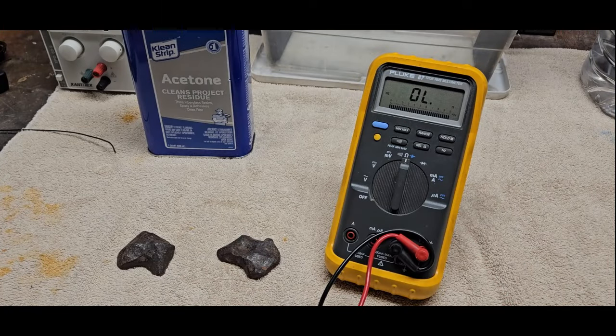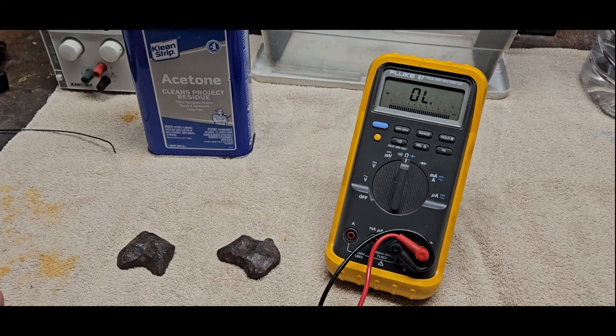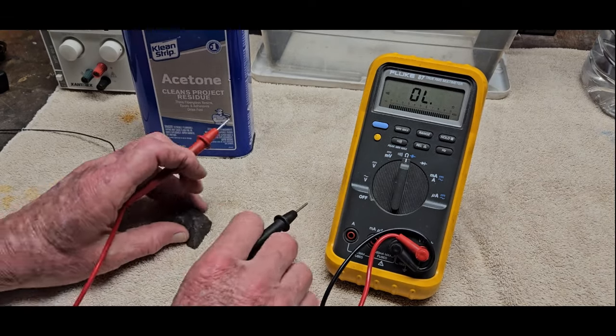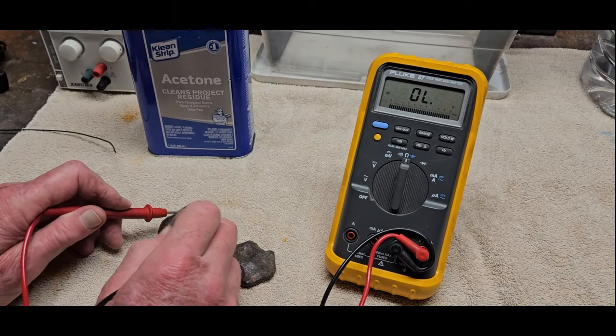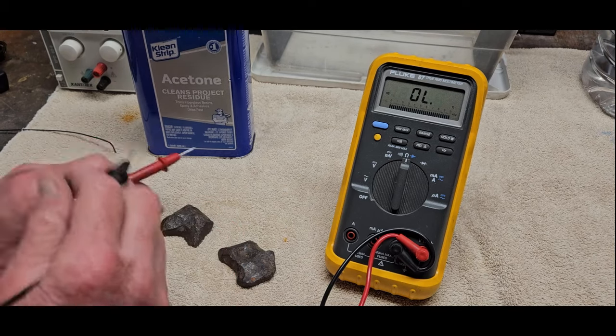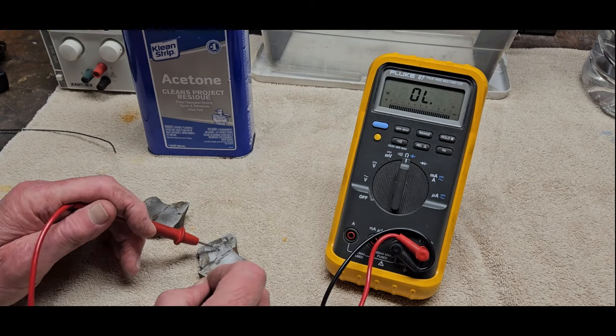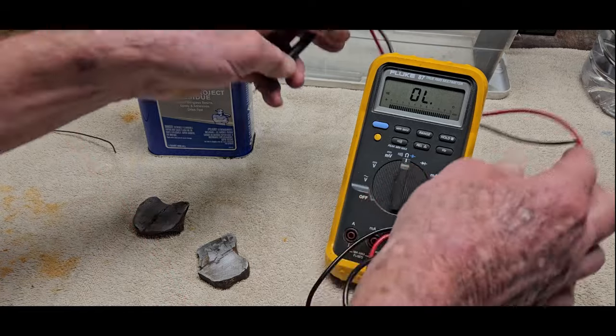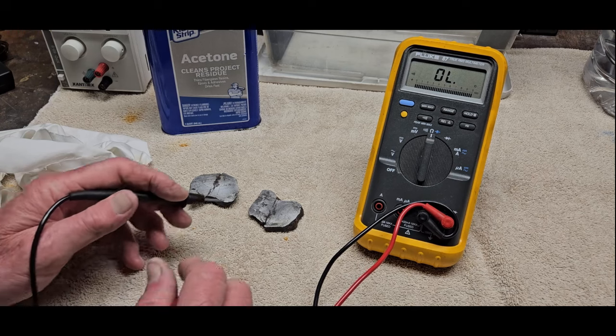So before we get down to wrapping the wire around the meteorite, we have to make sure that we have conductivity through the outside of the rock. So I've got out my old multimeter. I've set it to ohms. It has a function where it makes a tone when you get a short like that. So let's check the outside of these two pieces here. And as you can see, there's no conductivity. So we have to clean that off with the acetone. Check the other side. Oh, that side's got conductivity probably because I sanded it. So we'll take some acetone. We'll clean off the outside and we'll try it again.